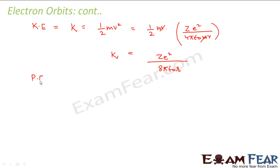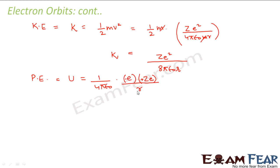Now let us talk about the potential energy. Potential energy U is given by 1 by 4 pi epsilon naught, times Q1 - the charge on the electron - into Q2 - the charge on the nucleus - divided by R. Since the electron's charge is negative and the nucleus's charge is positive, this comes out to be minus Ze squared divided by 4 pi epsilon naught R.